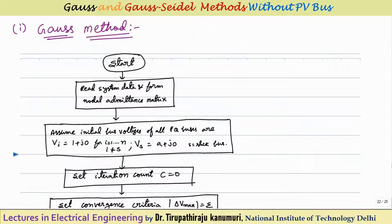For the Gauss method, the first step is to read the system data and form the nodal admittance matrix. Once formed, we assume initial bus voltages for all P-Q buses as 1+j0 (i.e., 1∠0°) for i = 1 to N except the slack bus. For the slack bus, the voltage is already specified as A+j0 = A∠0°.